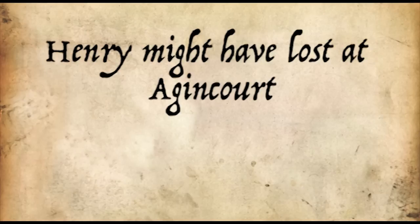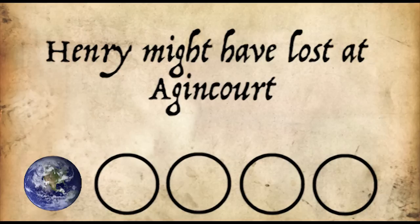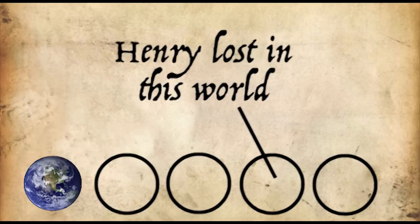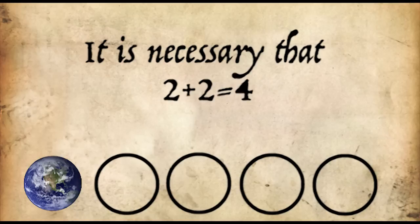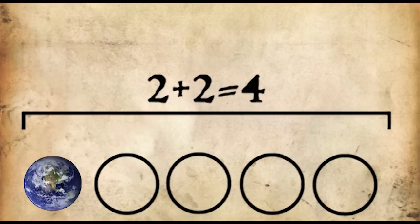To say something like, Henry might have lost at Agincourt, is to say that in one or more possible worlds, Henry lost at Agincourt. To say it is necessary that two and two make four, is to say that in every possible world, two twos are four.